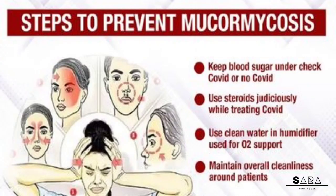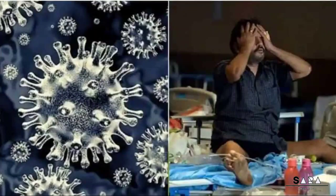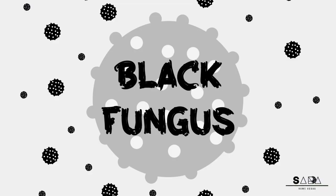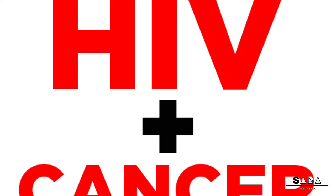Mucor mold is commonly found in soil, plants, manure, and decaying fruits and vegetables. It is also found in the air and even in the nose and mucus of healthy people. It affects the sinuses, the brain, and lungs, and can be life-threatening in diabetic or severely immunocompromised individuals, such as cancer patients or people with HIV.